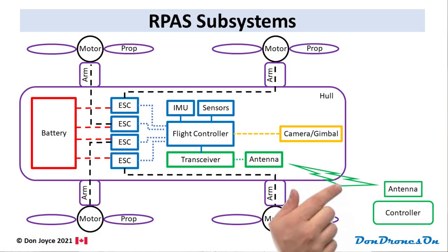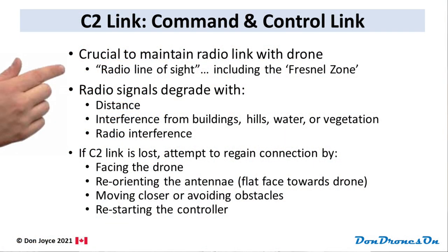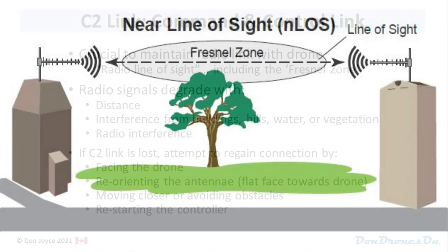Your GCS system communicates with the drone via a radio link, which may be a Wi-Fi link or something more sophisticated like DJI's OcuSync. Regardless of the sophistication, it is crucial to maintain what is called the radio line of sight. Radio line of sight is very similar to visual line of sight, with one weird difference. Radio signals can be partially degraded by direct obstacles, but they can also sustain interference from obstacles near the radio path due to something called the Fresnel Zone.